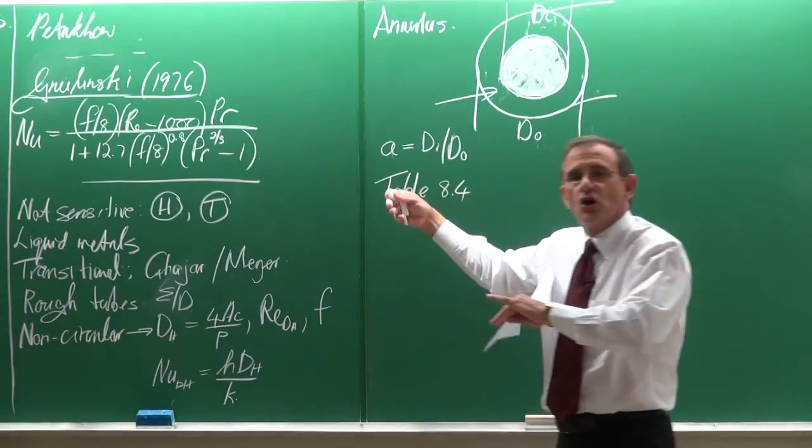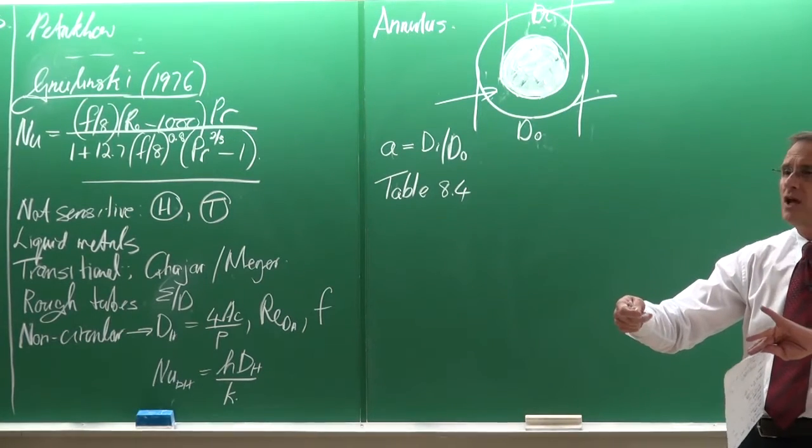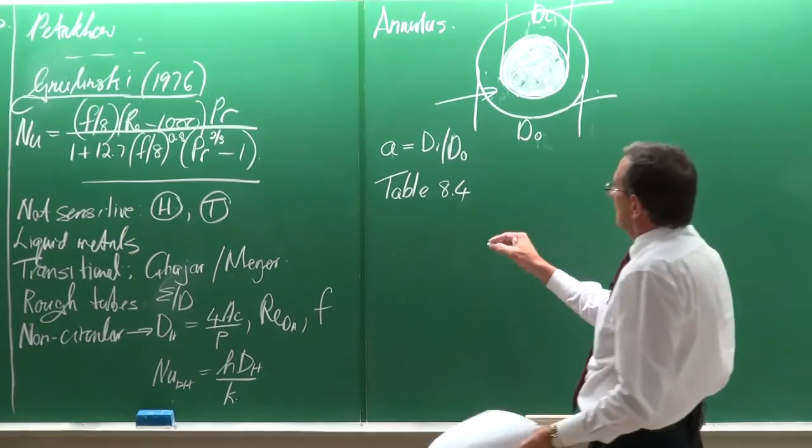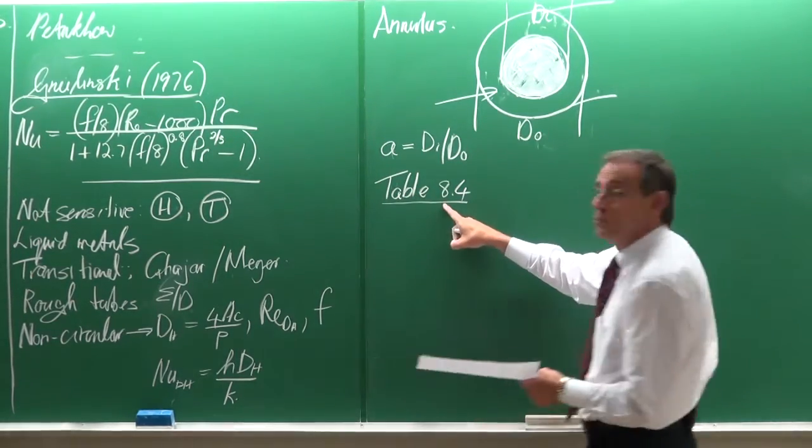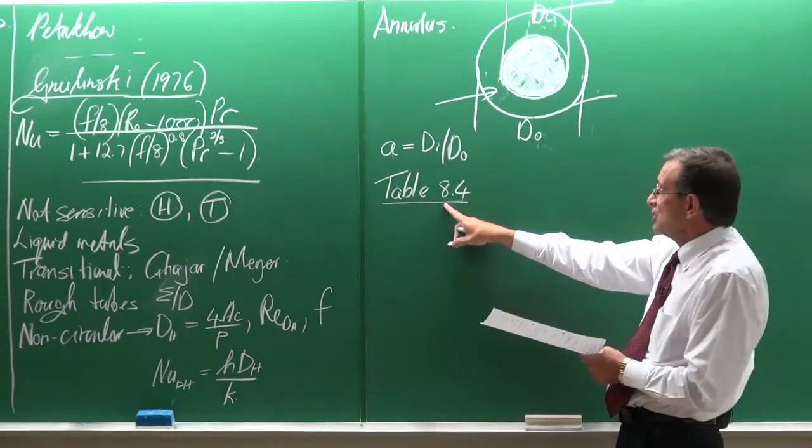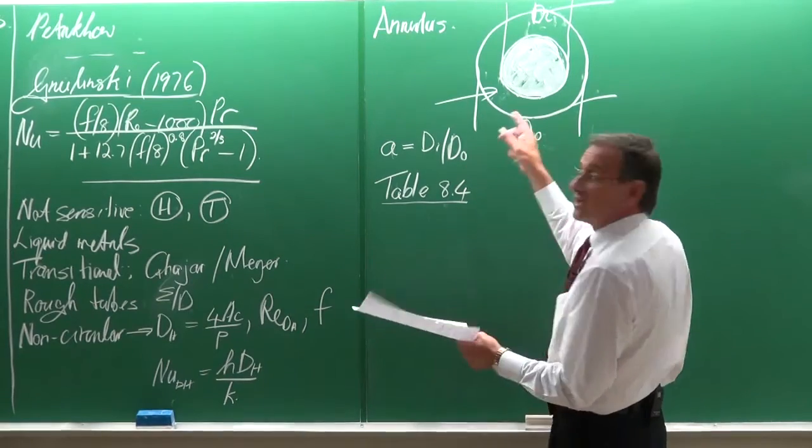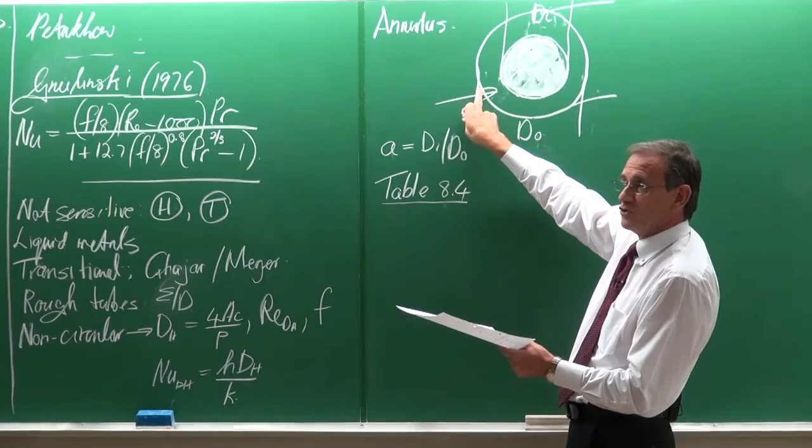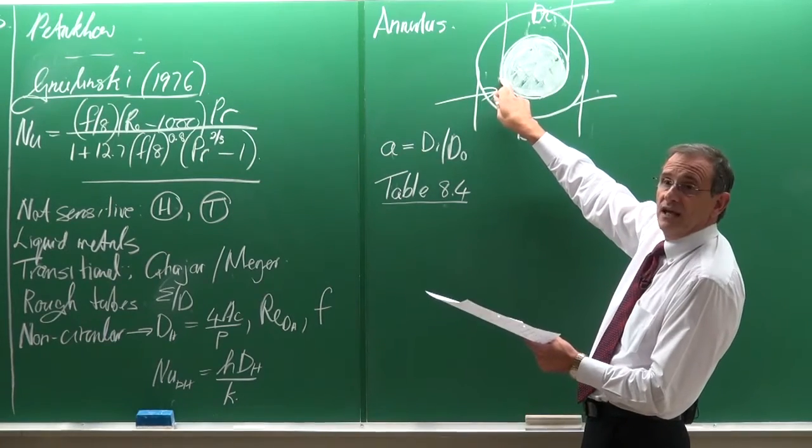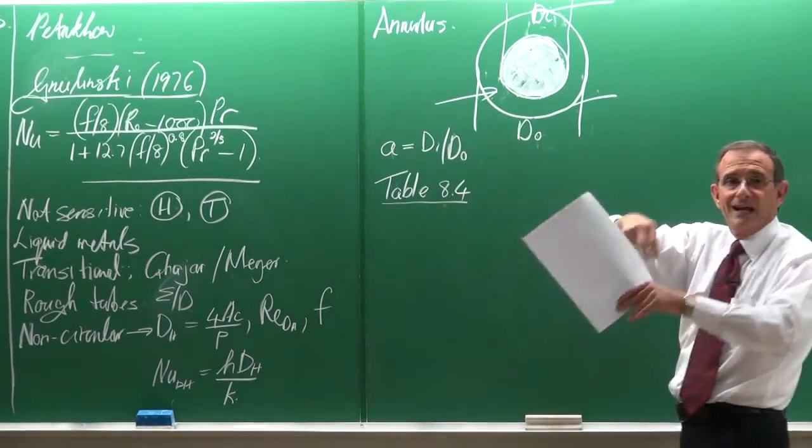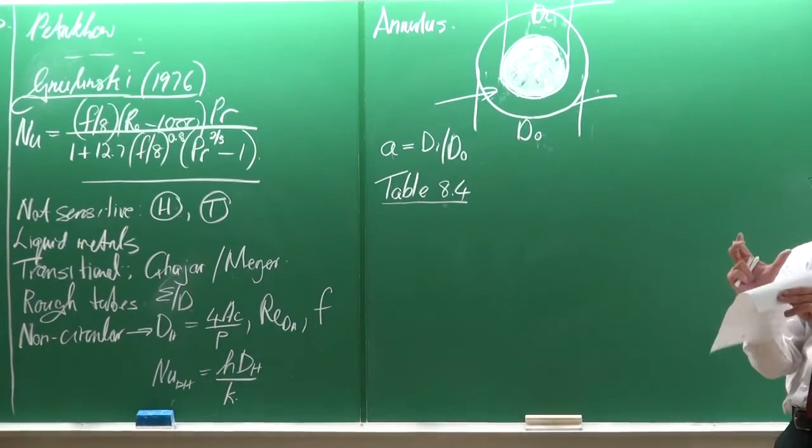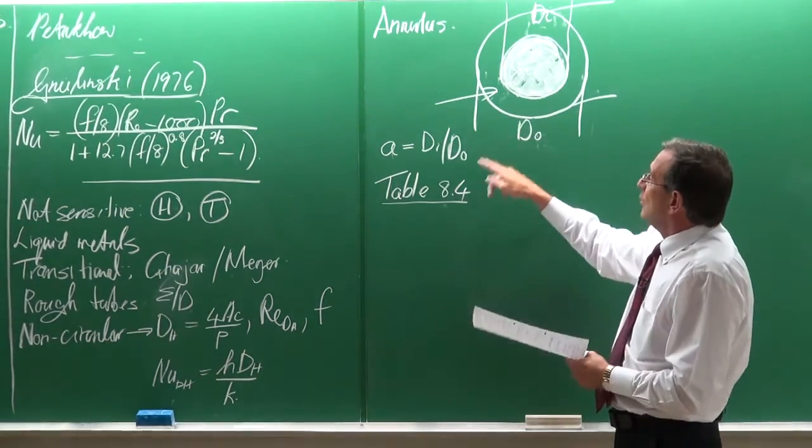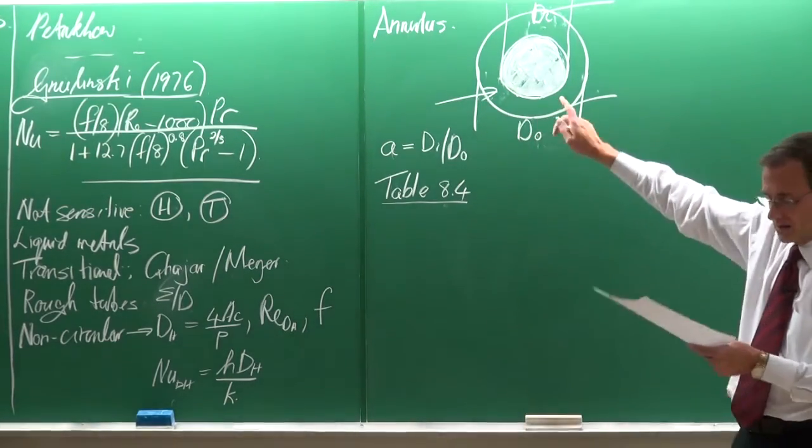But you will also see in the textbook in table 8.4, some values are given that you can use. Not a lot, so just very limited information. Now what is always important to take into consideration here is where does the heating and cooling occur? Because in some cases it can actually occur on the outside wall, some cases it can be there. One of the walls can be adiabatic, which means it has been insulated, typically, and all that would influence what is happening in the annulus.